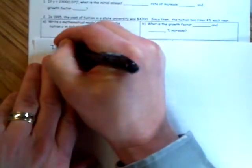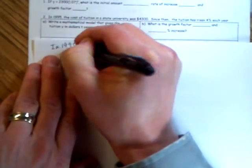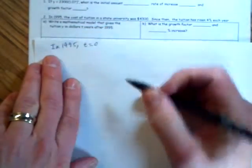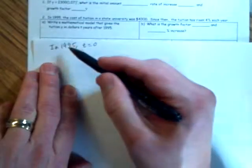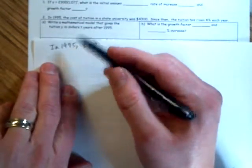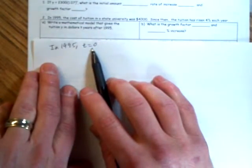What you're supposed to realize is in 1995, t equals 0. Any year after that, you subtract 1995 from that year to find the t value.